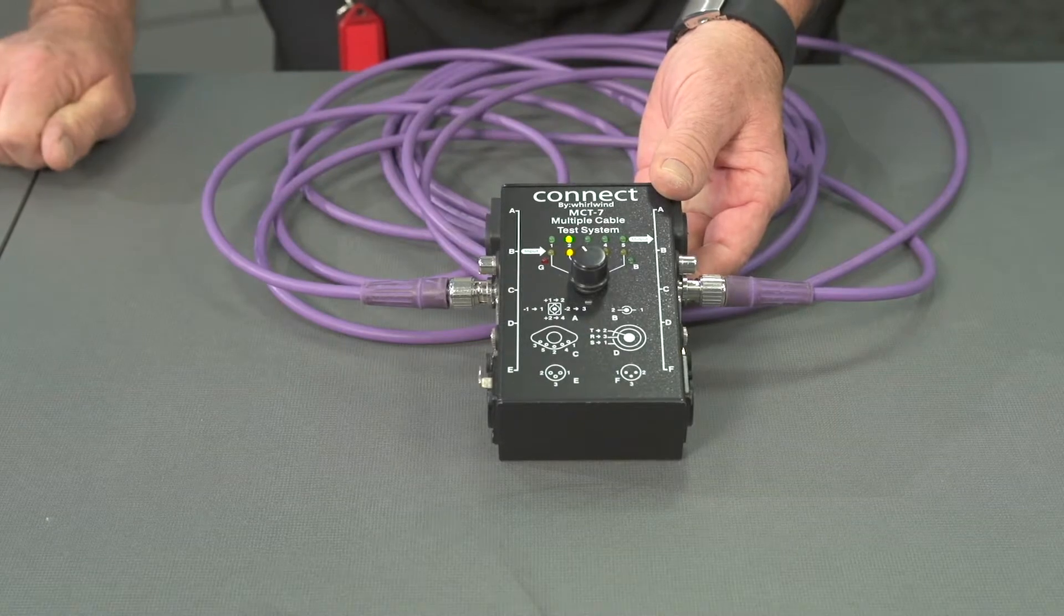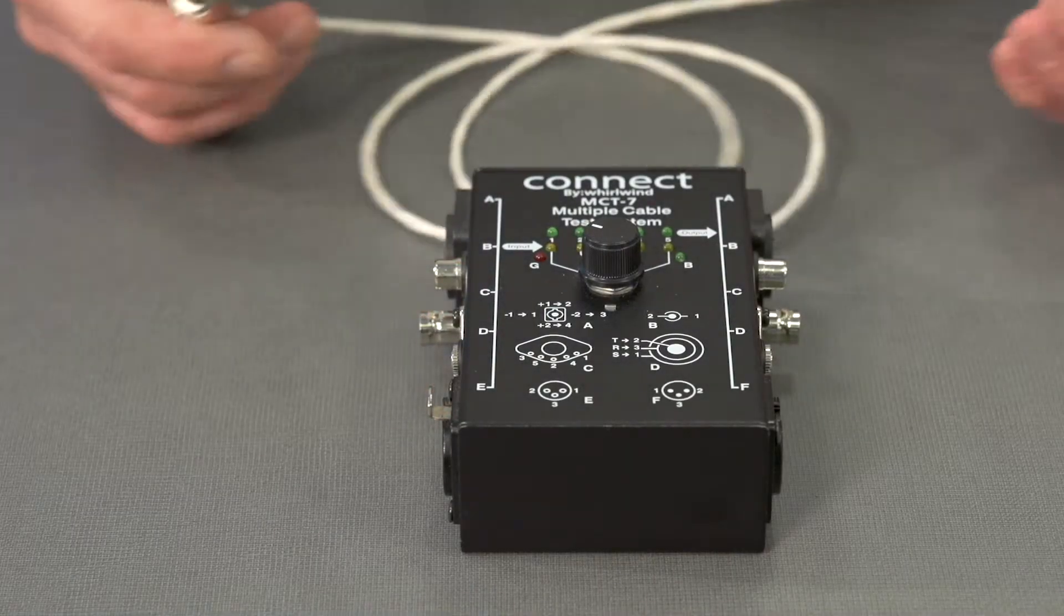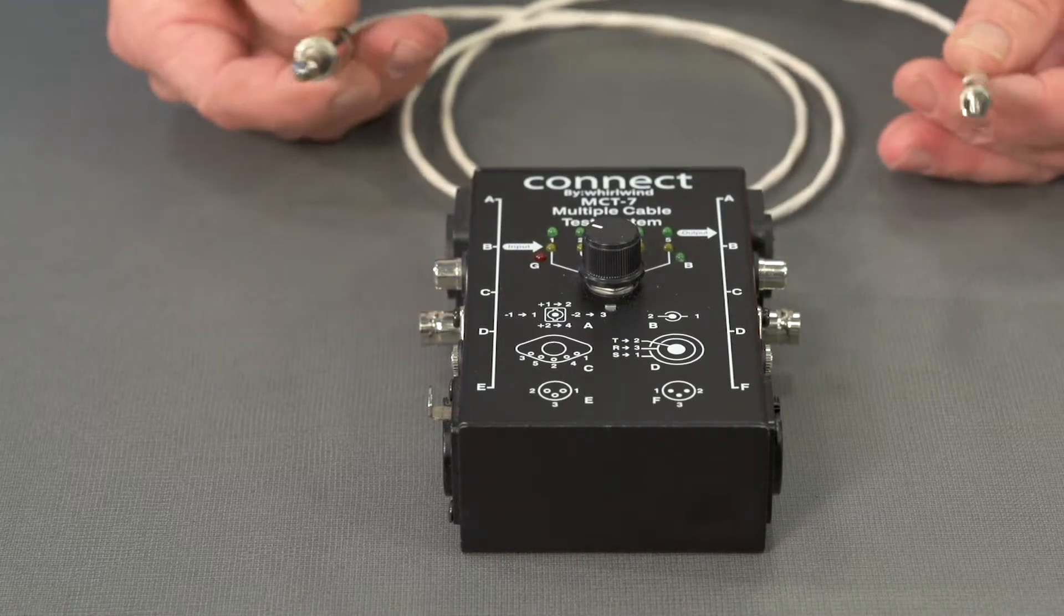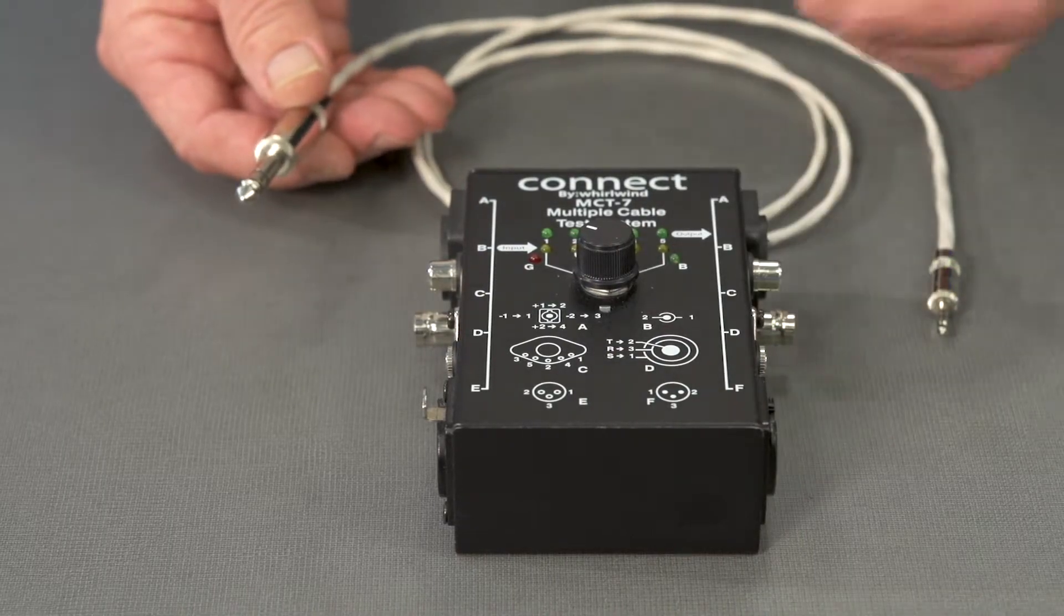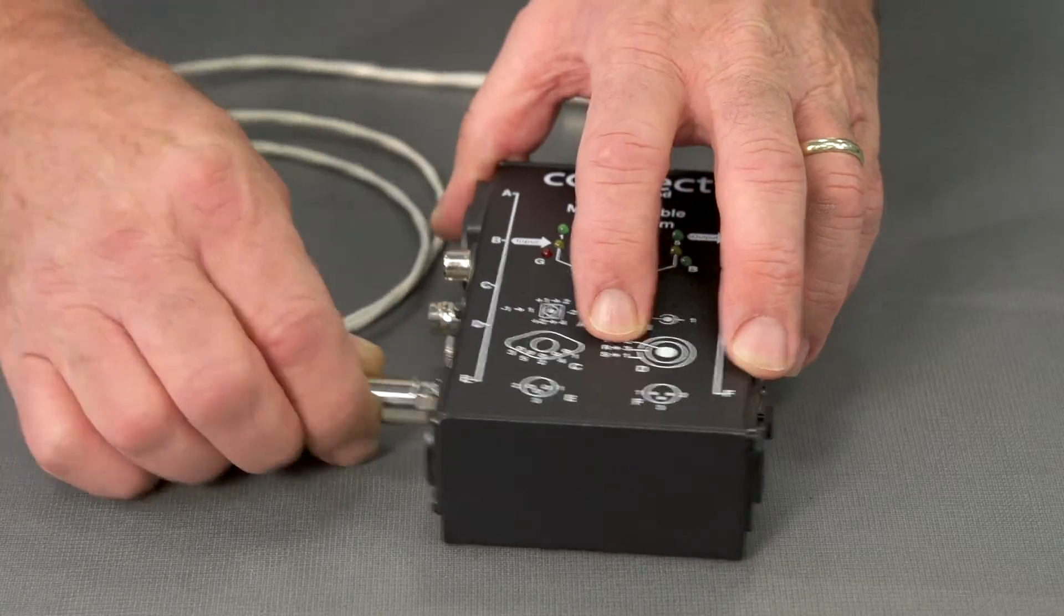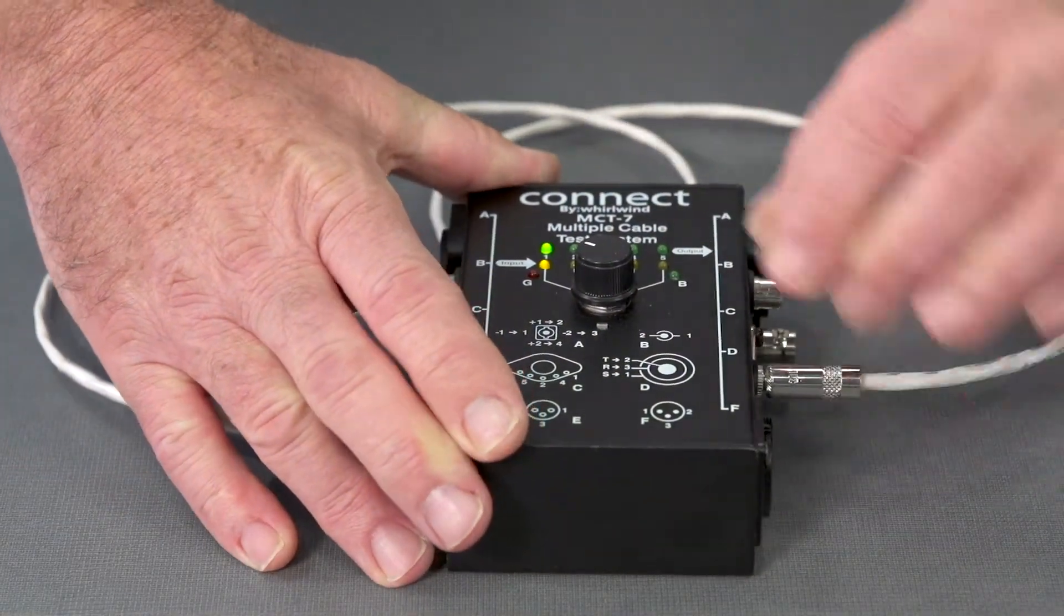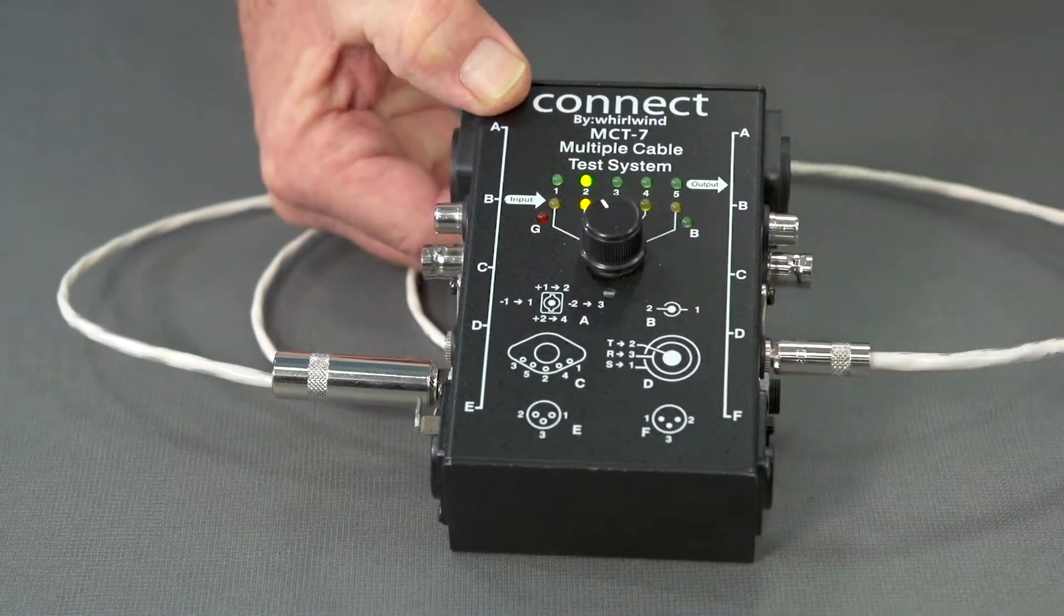Now let's test one of the tip ring and sleeve combinations. What we have is a quarter inch TRS and a 3.5 TRS. Again, this device is designed to test this type of cable. We merely plug it into the appropriate side of the box, and there we can read our shield, our signal carrying conductor one, and our signal carrying conductor two.